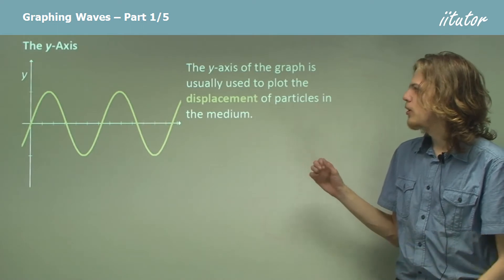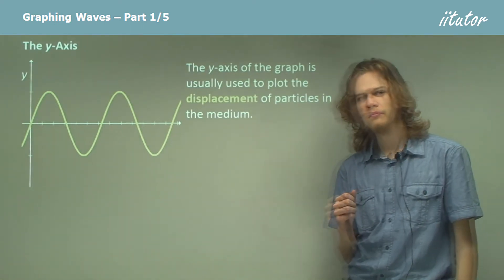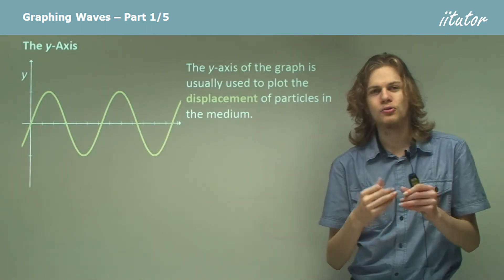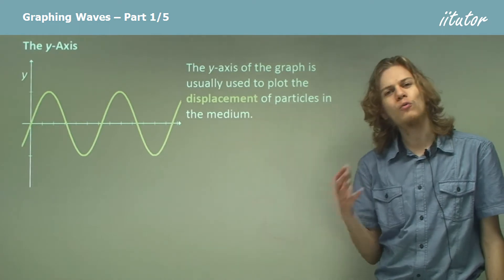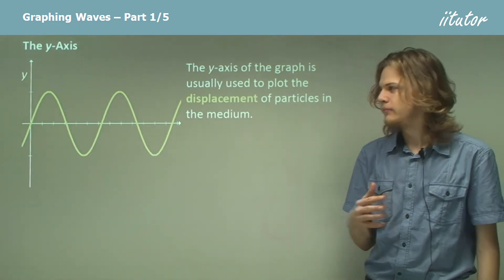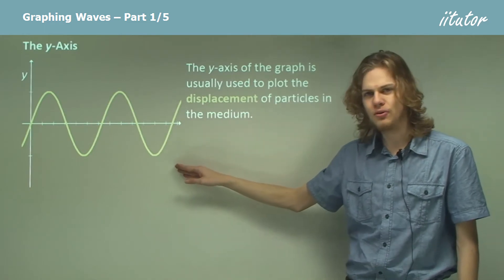Now the y-axis of the graph is usually used for the displacement of the particles. We know that in a wave the particles get displaced, they vibrate back and forth, and so on the y-axis we show how far it's vibrated. So this will be displaced in the positive direction and this will be displaced in the negative direction.